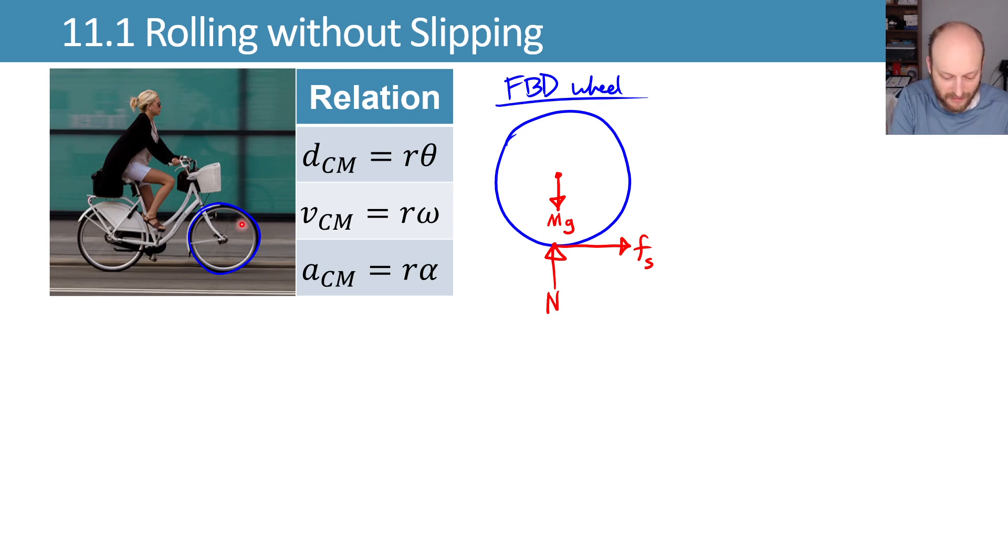Actually maybe we should use the back wheel for the drive wheel. What we should find is these relationships: the distance traveled by the center of mass is r times theta, where theta is the number of revolutions in radians, and the velocity of the center of mass should equal r omega. So let's see if we can do that.